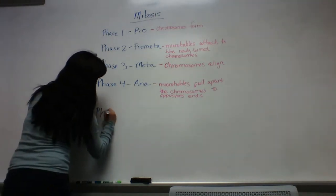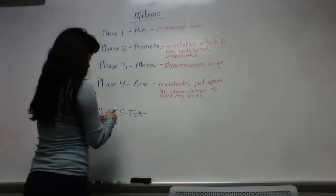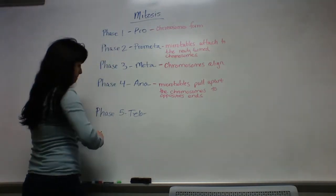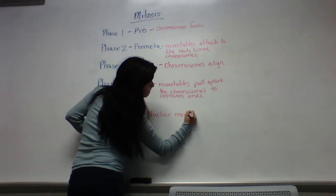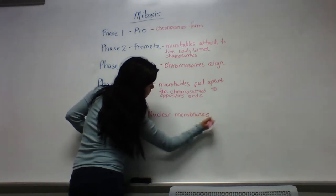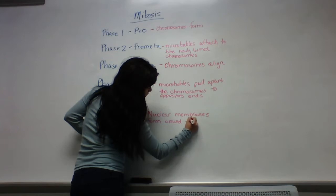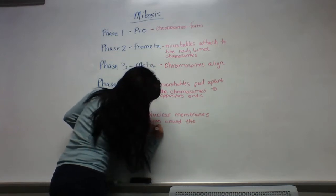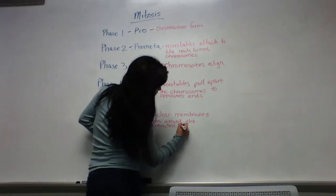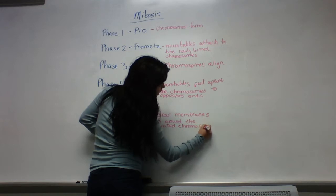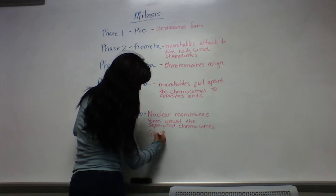And phase 5, telo, nuclear membranes form around the separated chromosomes, which are now chromatids.